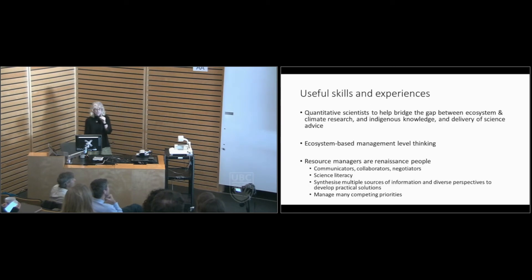And the skills and experiences we're looking for, we're looking for quantitative scientists with the emphasis being on quantitative because that's how we really are able to deliver risk-based advice to help bridge some of these gaps we've been discussing. Ecosystem-based management level thinking and resource managers, Neil wrote this part, he's a renaissance man. We need communicators, collaborators, negotiators, science literacy, people that can synthesize multiple sources of information and diverse perspectives and manage many competing priorities.